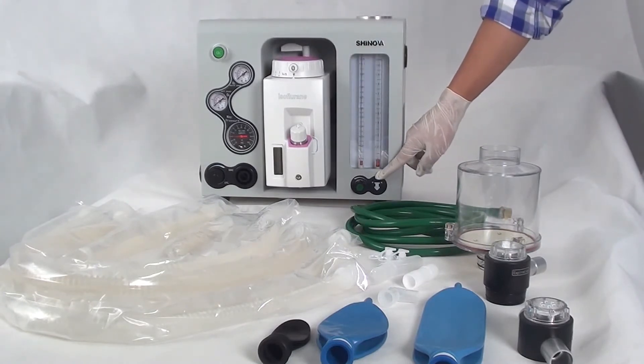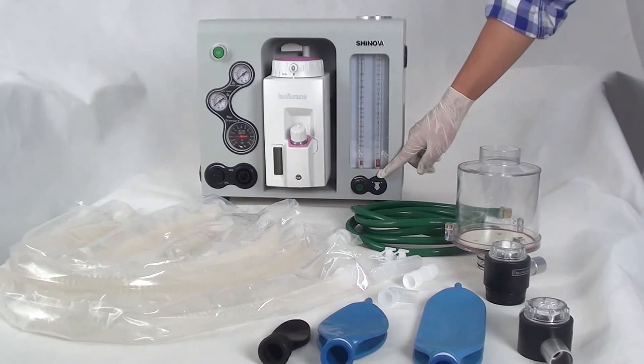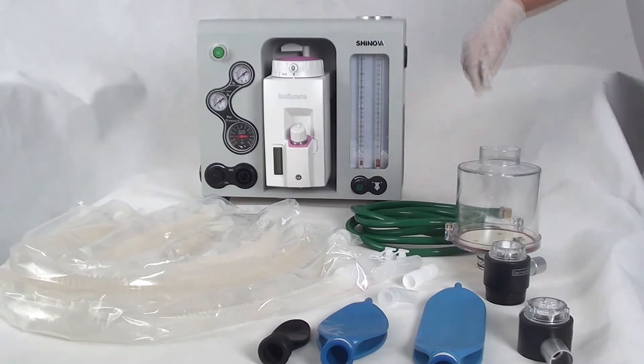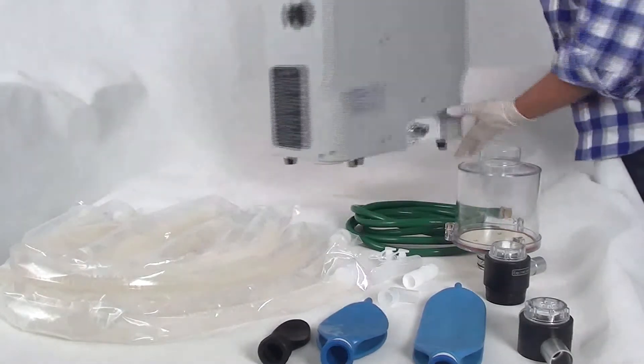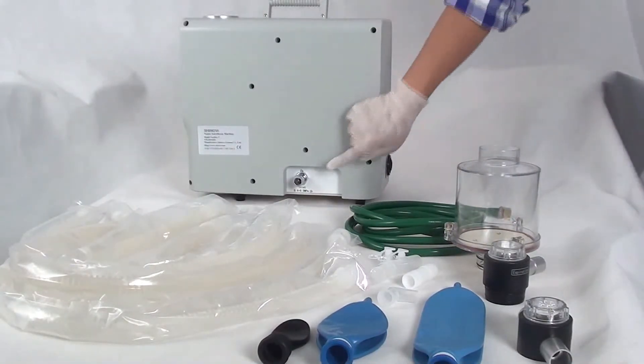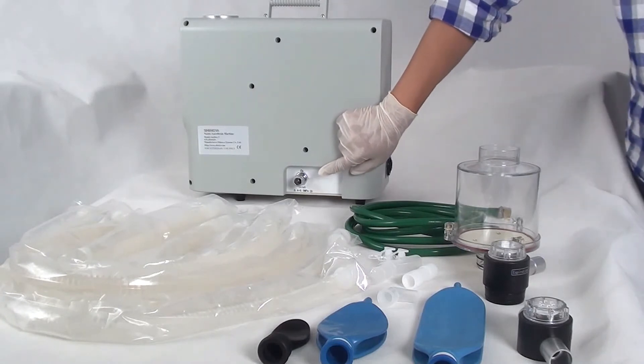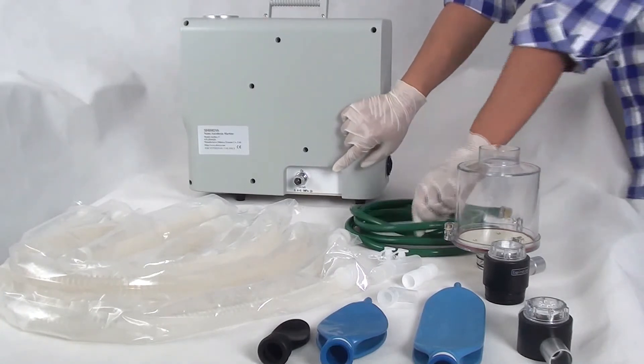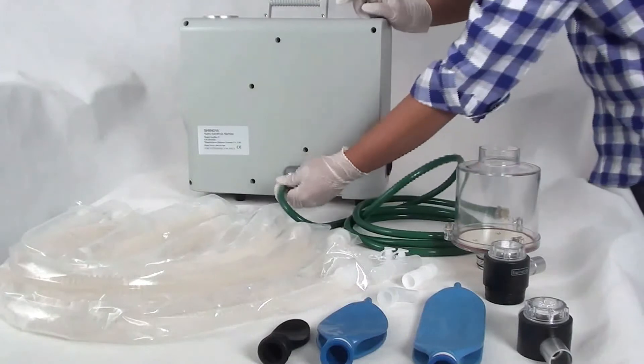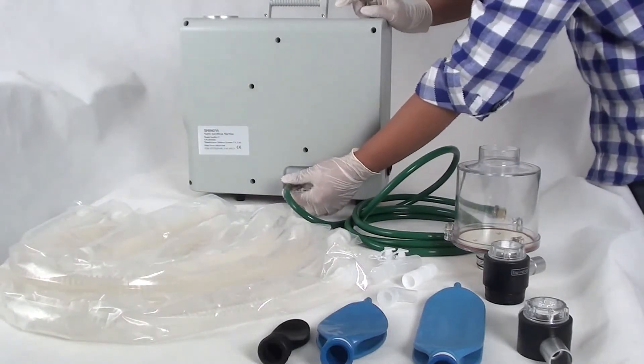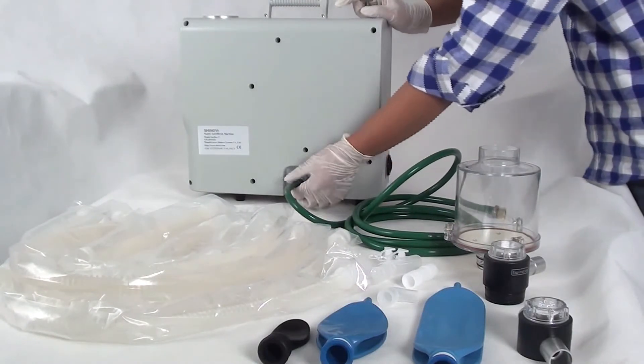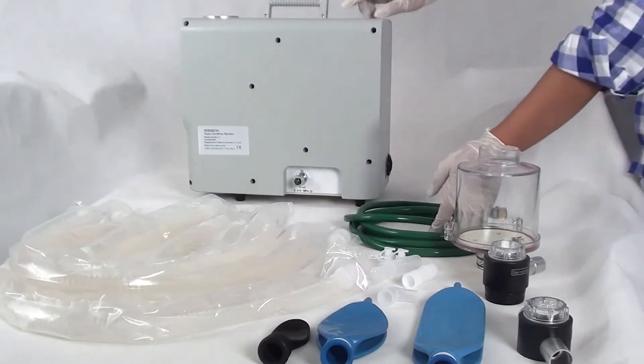This button is for oxygen adjusting. Let's look at the back side. You can see the connector. It's for connecting the oxygen supply pipe. This pipe is the green one.